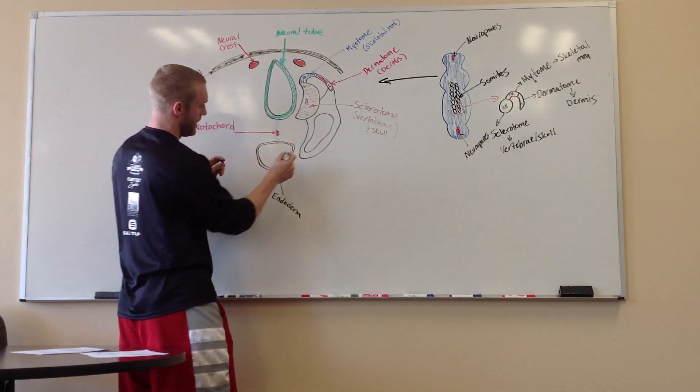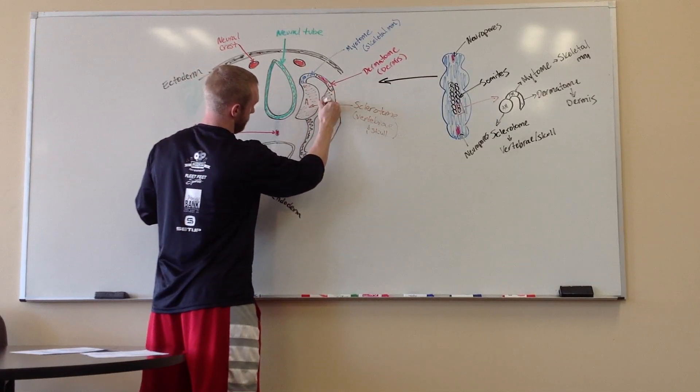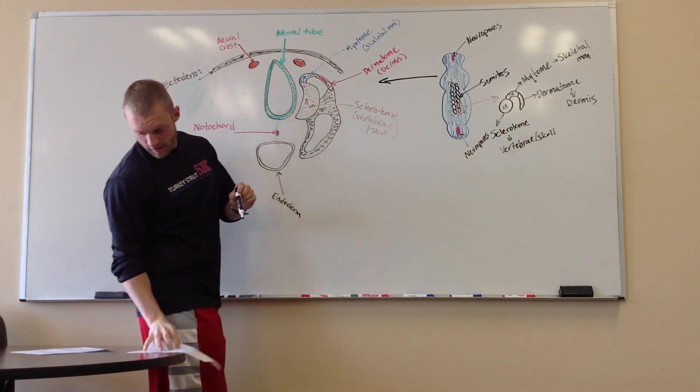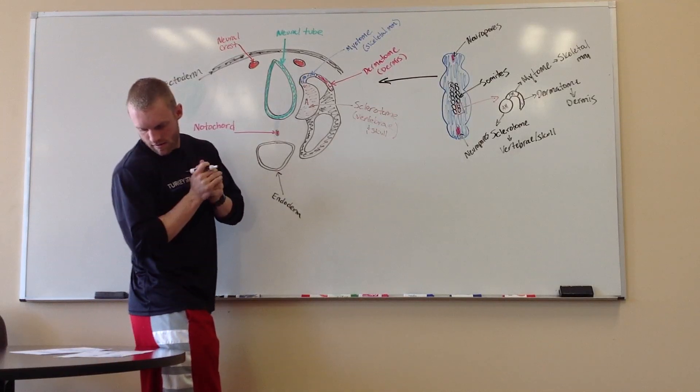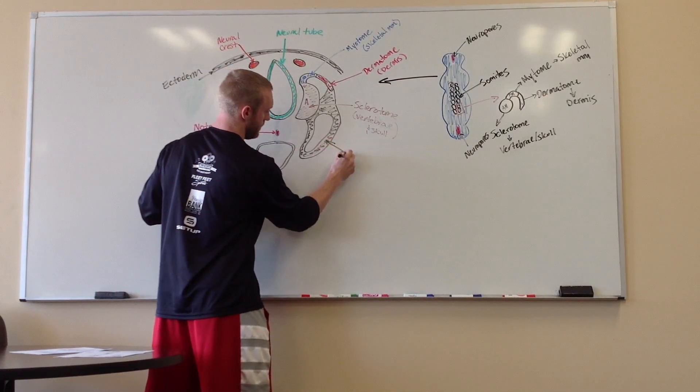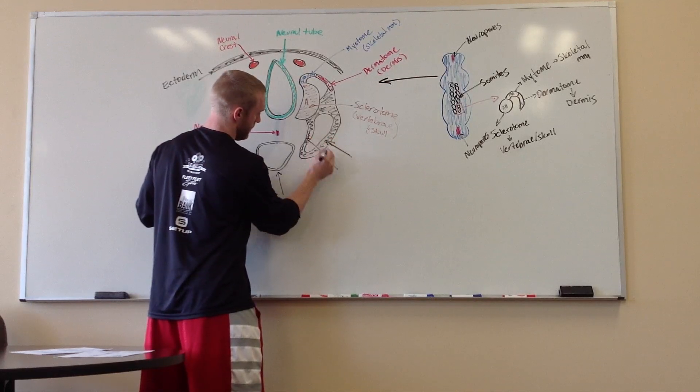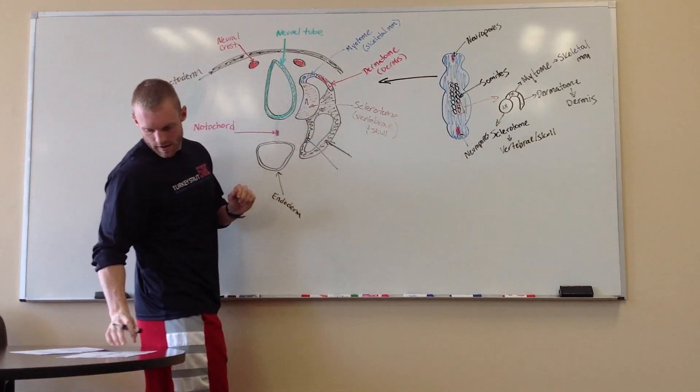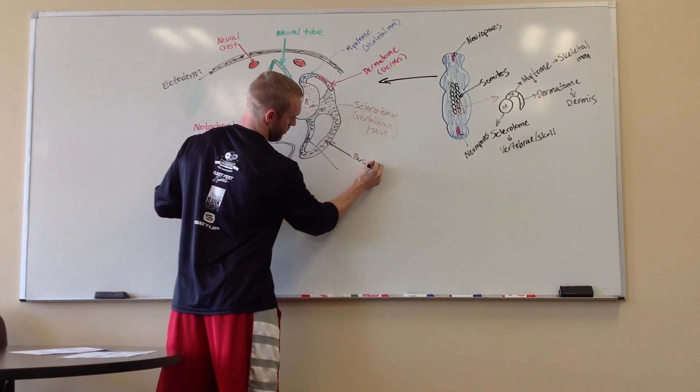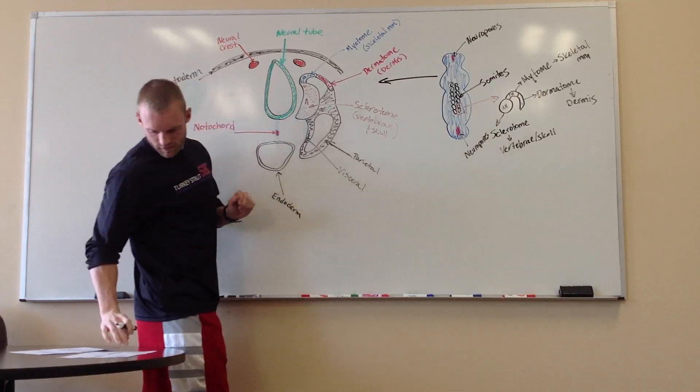And this thing right here, I'll color it in just so you can kind of see. I've got to look at my notes for this one. This is going to be our mesoderm. So these are going to be two sections of it. This side is one, this side is another. This side right here is our parietal and this one right here is our visceral. Visceral lateral plate, parietal lateral plate.